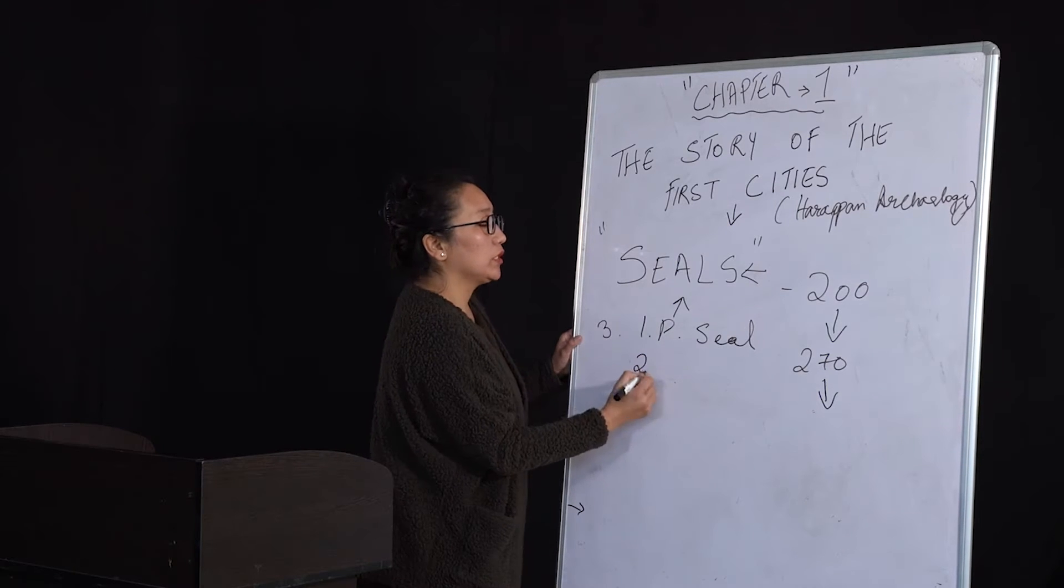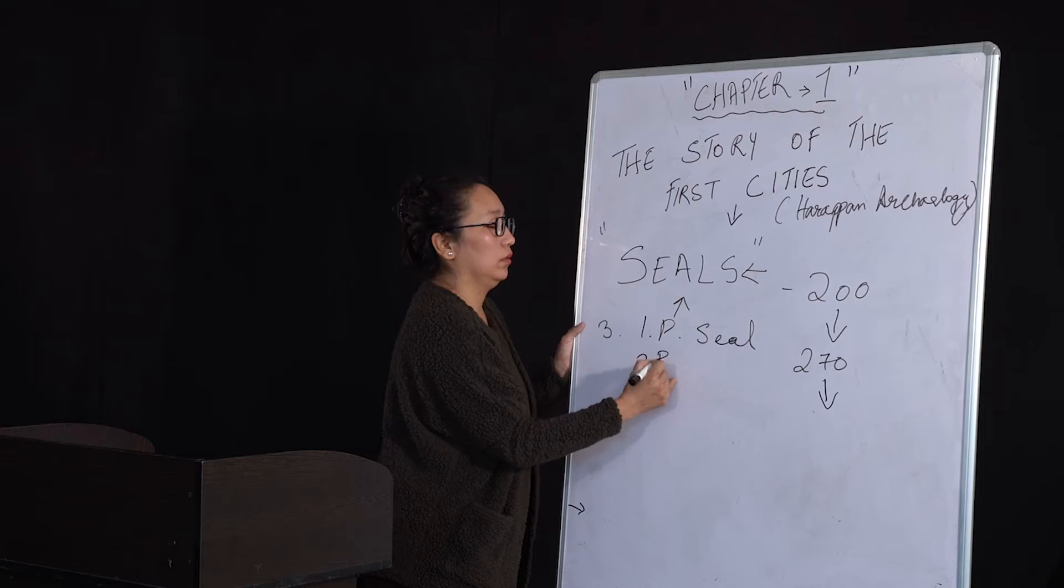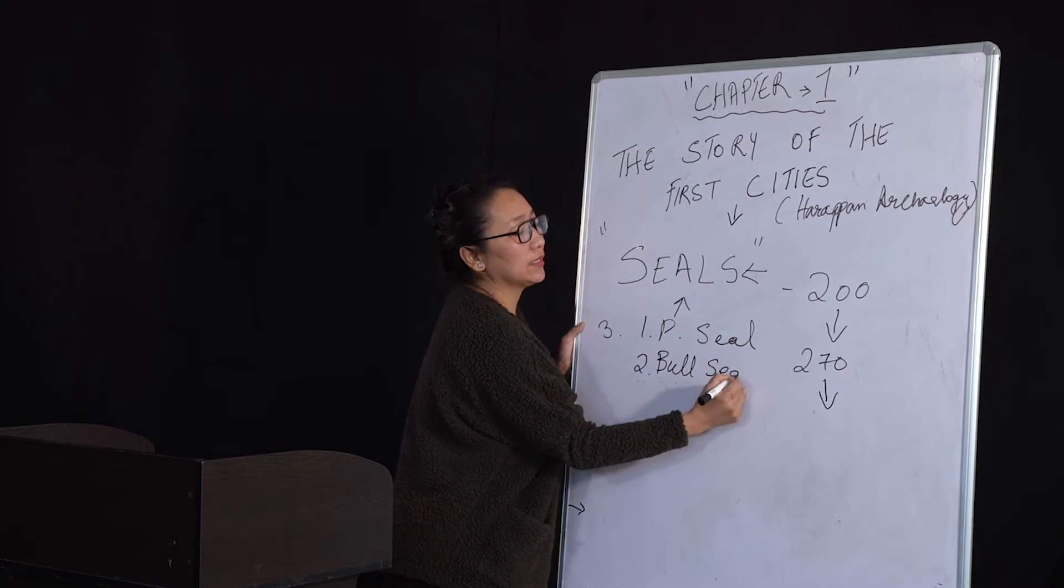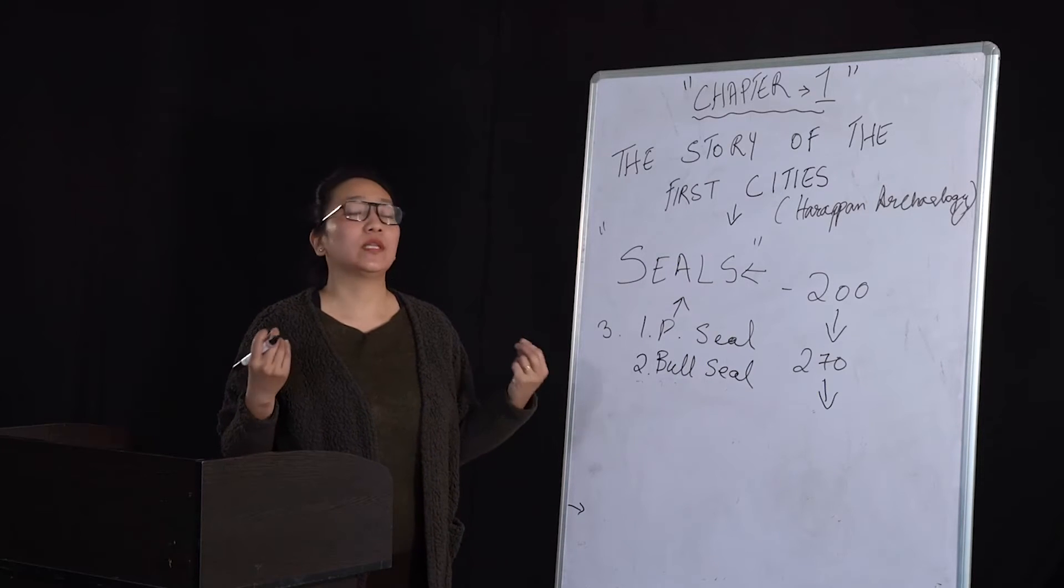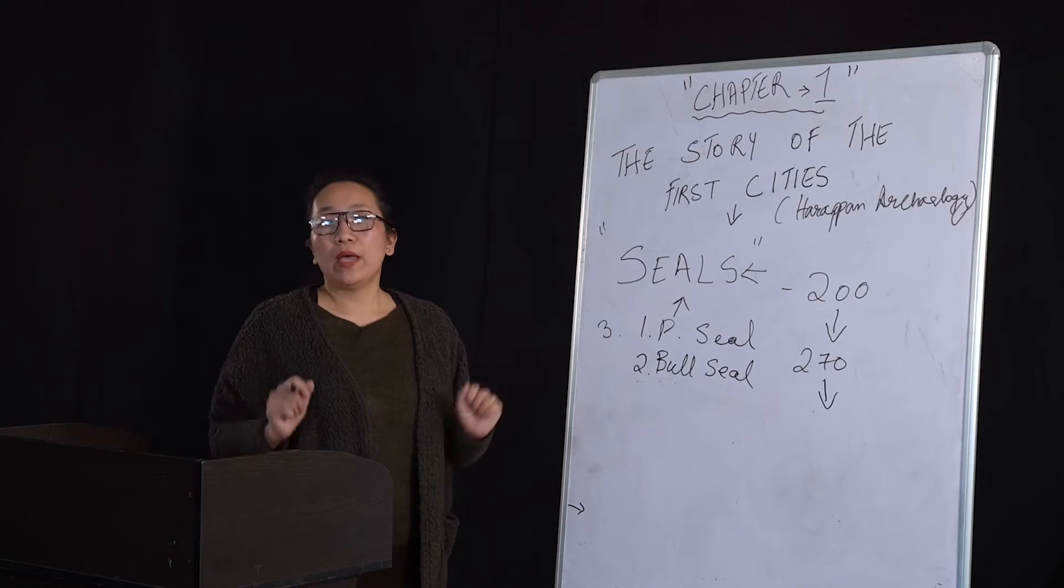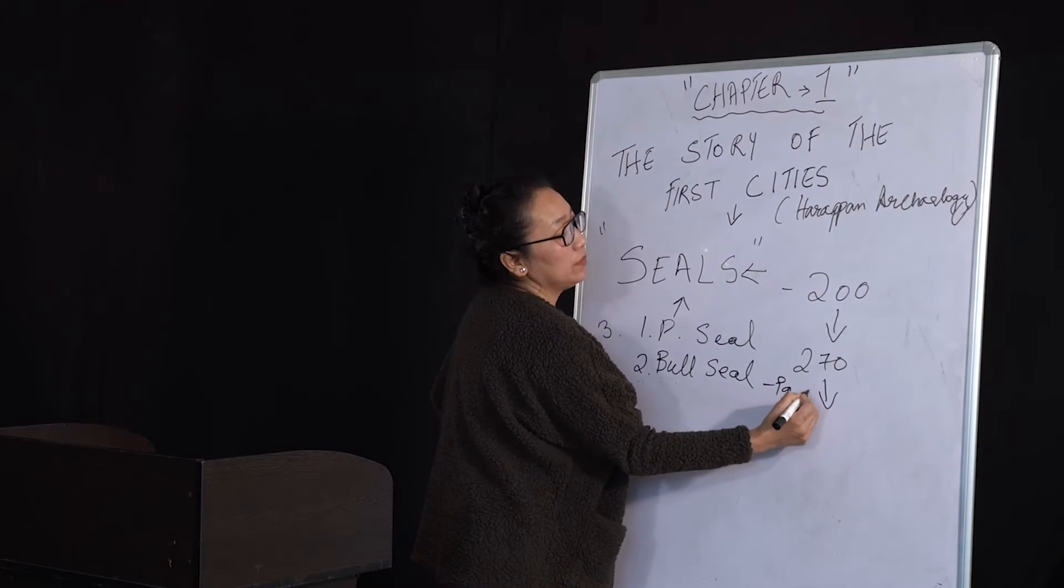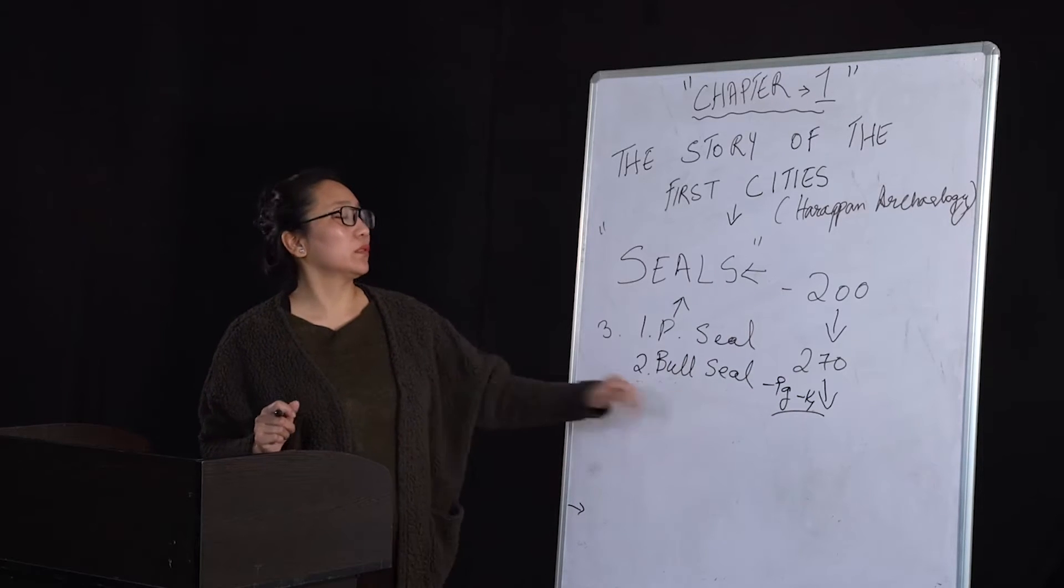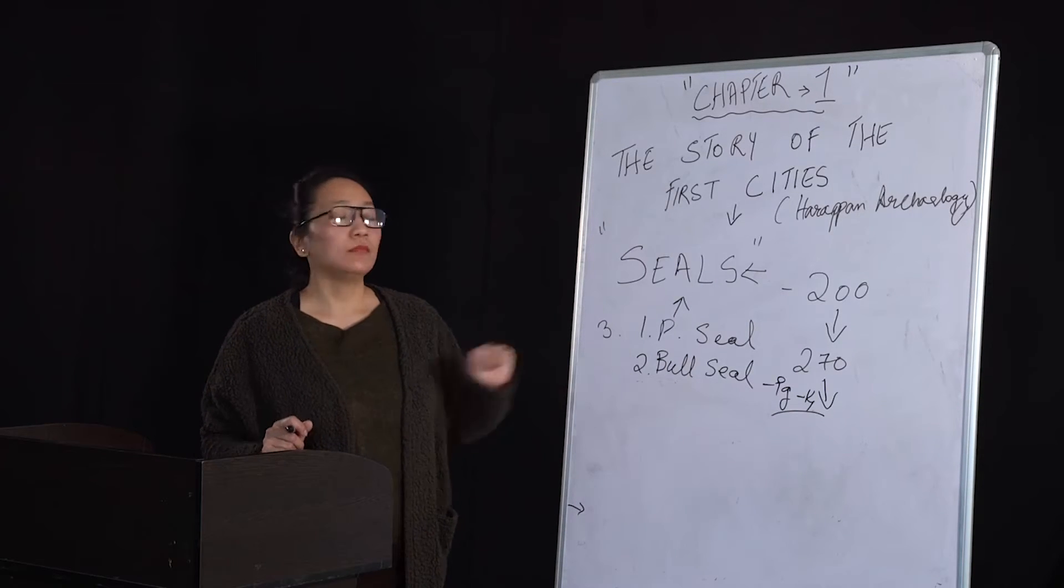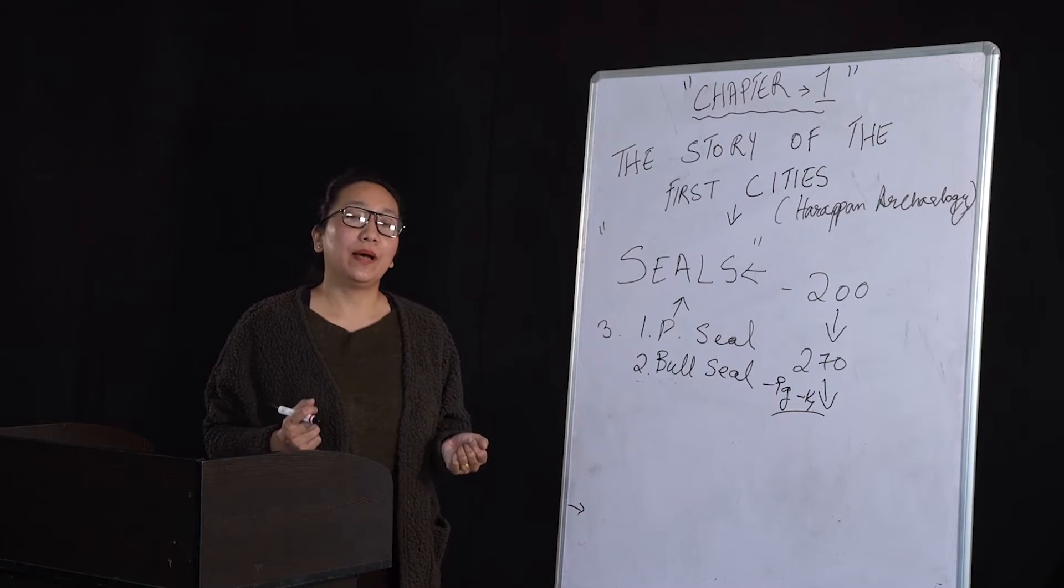The second seal which was found to be very important was called the bull seal. This seal was found in several pieces. To have a clear picture of this seal, please turn to page number 14 where you will find a number of examples. The bull in the seal was very healthy and it was a Brahmi seal.